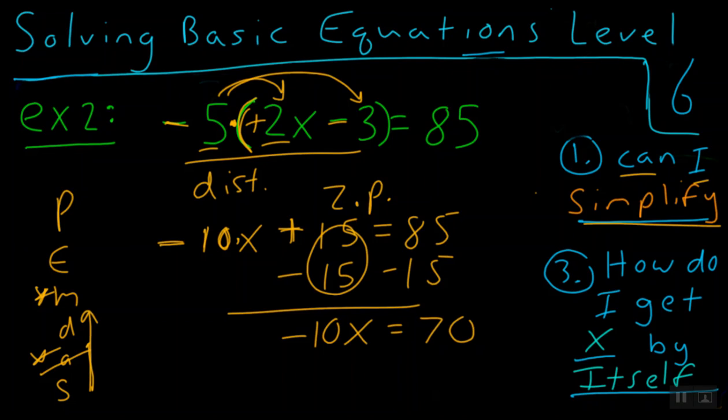And wait a second, how do we get rid of this negative 10? Well, when two things are side by side, they're being multiplied. And so we go up to our multiplication, and of course we get rid of that by dividing both sides by negative 10. Negative 10 over negative 10 is 1x equals, and a positive divided by a negative is a negative, and 70 divided by 10 is just 7. And our answer is x equals negative 7.